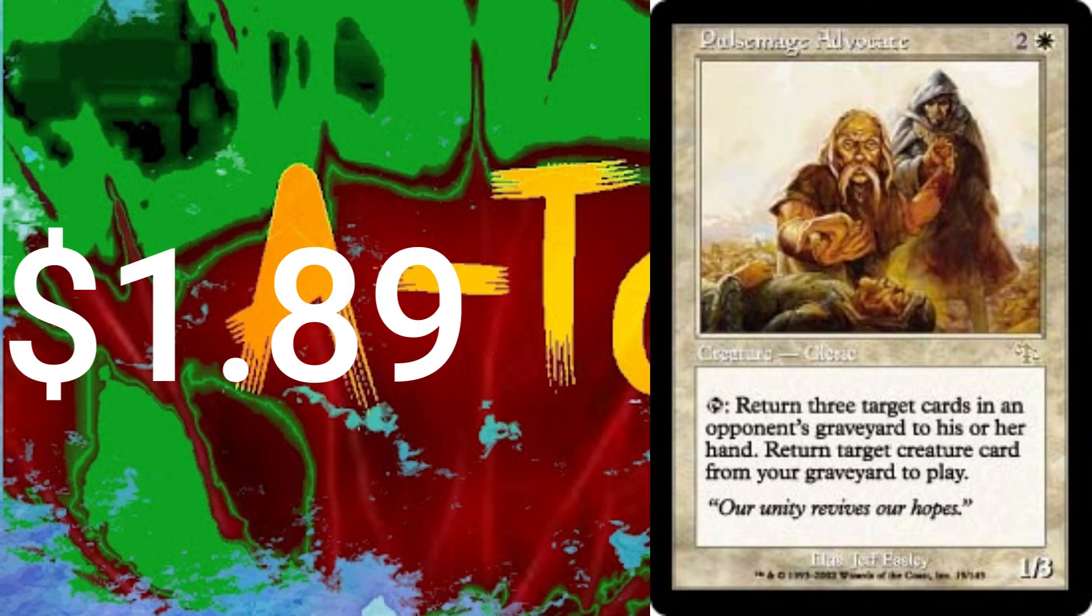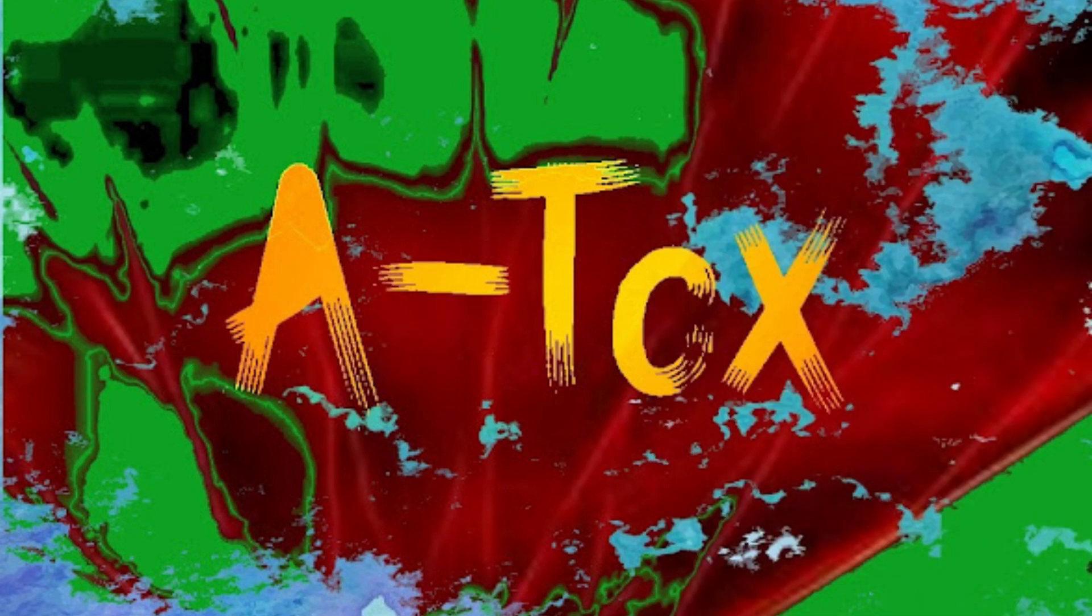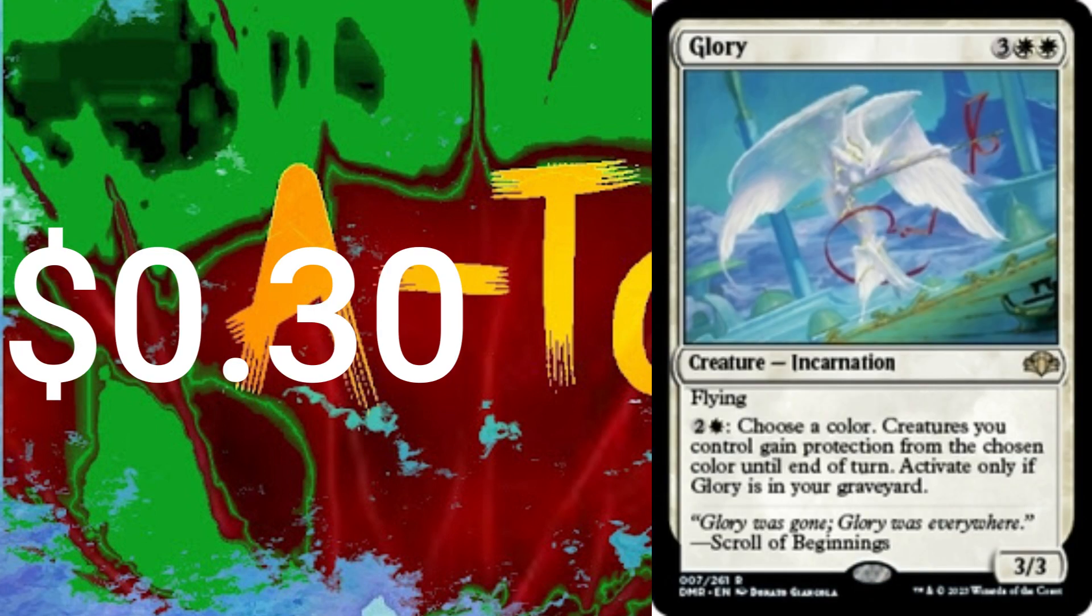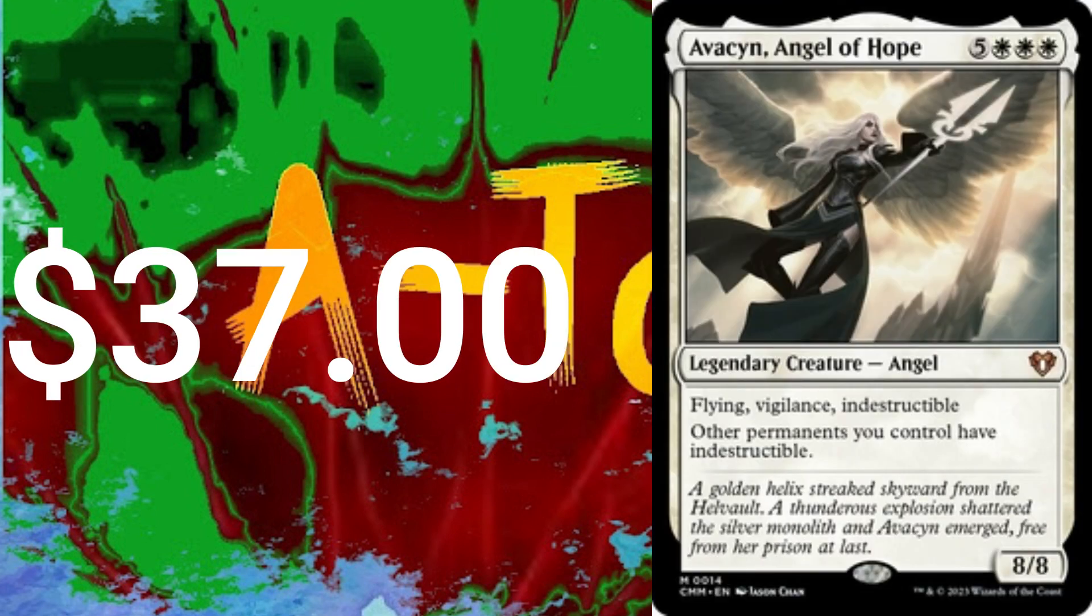Puresteel Paladin, Keeper of the Accord, Cartographer. I know what I said. Solemn Simulacrum, Gotta have the Glories, Karmic Guide, Reveillark, Sun Titan.